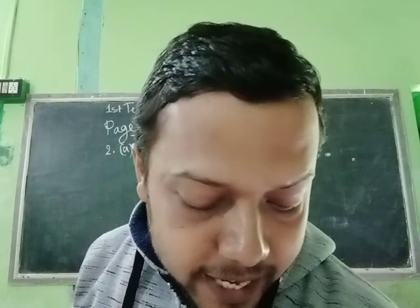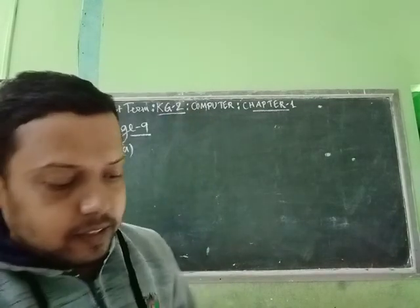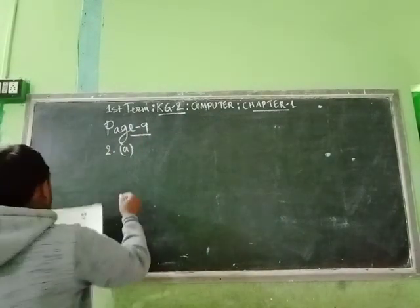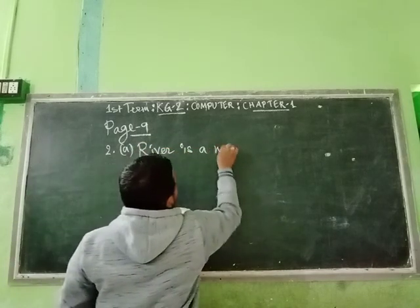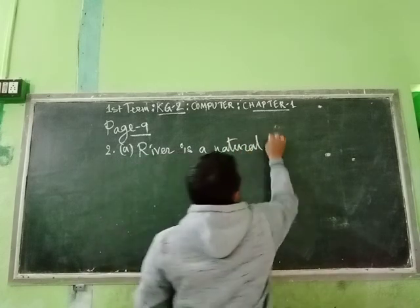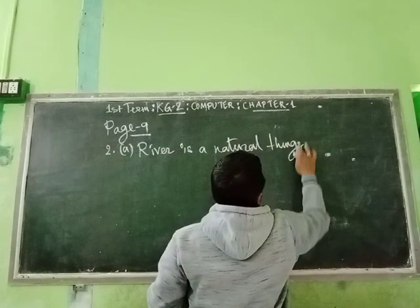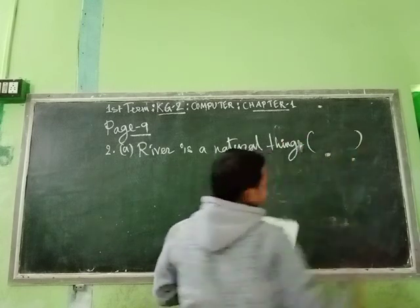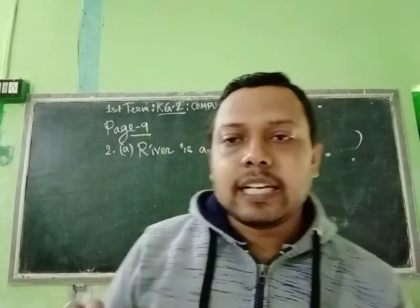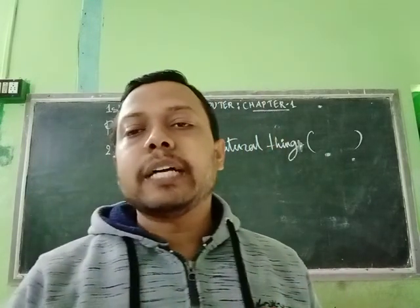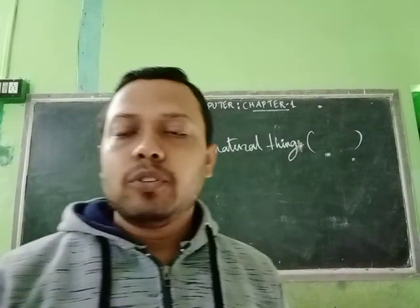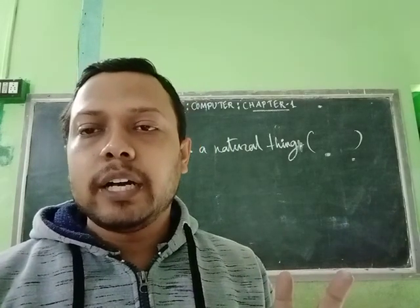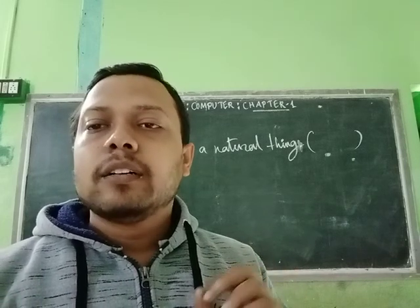Question number 1(a) is: a river is a natural thing. Before writing the answer, we repeat our last class again. In this chapter, we come to know that there are two types of things in the world: natural things and manmade things.